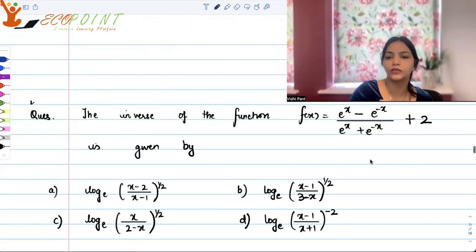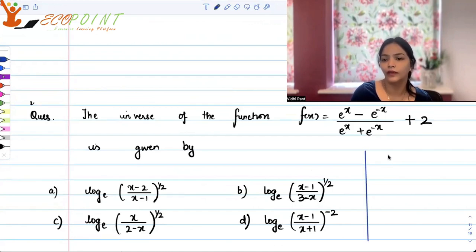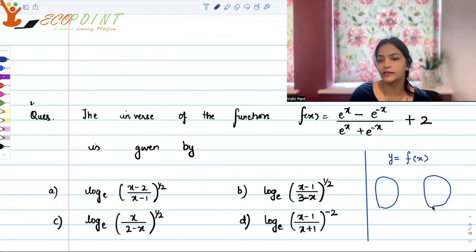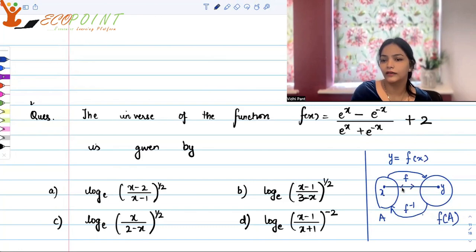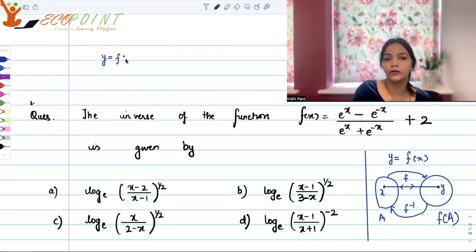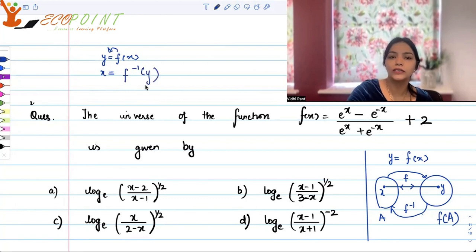We were interested in the inverse. You are given a function y which is a function of x. If the inverse exists, this is the domain and that is the range, with a one-to-one correspondence between elements. So if x maps to some y, we should be able to get the same x back from that y — that's what the inverse function means.